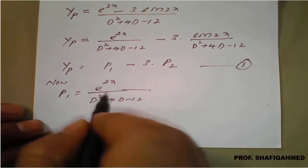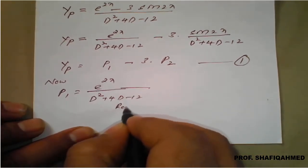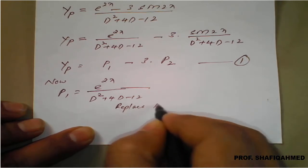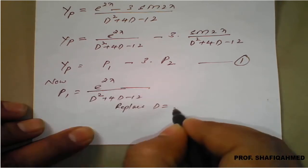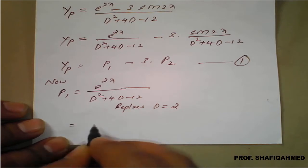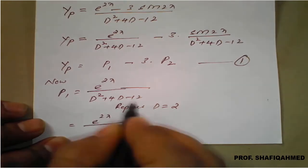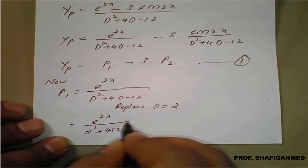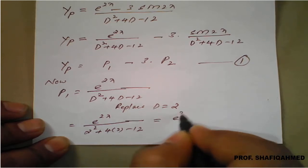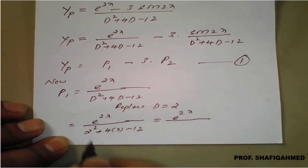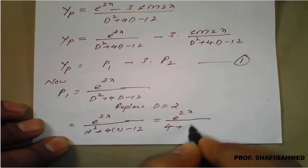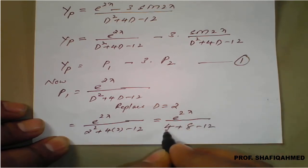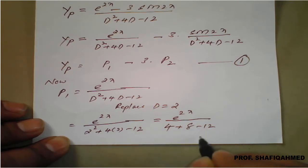p1 is e raised to 2x divided by d squared plus 4d minus 12. This is type 1. For type 1, replace d equal to the coefficient of x, which is 2. Therefore, e raised to 2x divided by 2 squared plus 4 times 2 minus 12. Simplify: 4 plus 8 minus 12, so the denominator turns to 0.